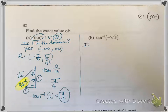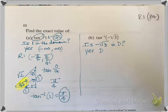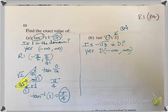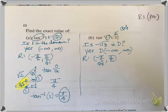For inverse tangent of negative radical 3: first, is negative radical 3 in the domain? Yes — the domain for inverse tangent is negative infinity to positive infinity. Next, the value is negative, so I need a quadrant 4 angle, because the range is negative pi over 2 to pi over 2 and negative values go into quadrant 4. I'm going to rewrite negative radical 3 as negative radical 3 over 1, since tangent is opposite over adjacent.